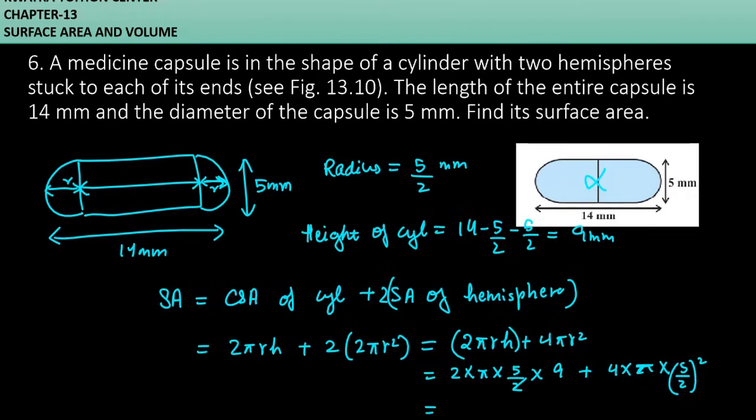Now we can simplify to get the final answer. 2 from 2 will cancel, giving us 45π. Next, 2 square is 4 which will cancel, giving us 5 square which is 25π. Adding 45π and 25π gives us 70π. The π value is 22 by 7, and 7 cancels with 70 to give 10.